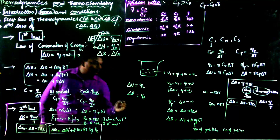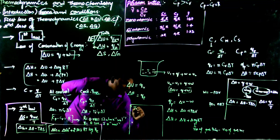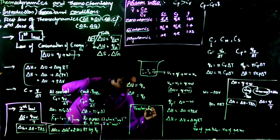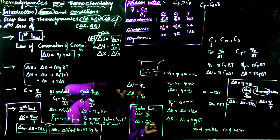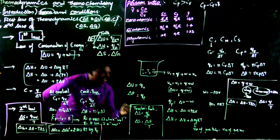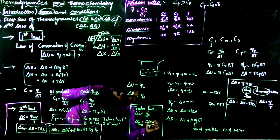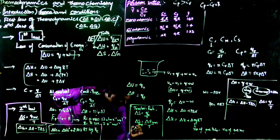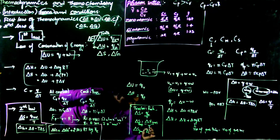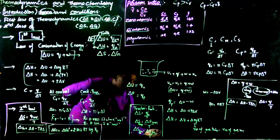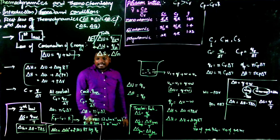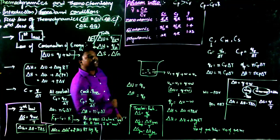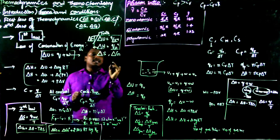For the Second Law, most questions come from entropy and Gibbs free energy. Note Trouton's rule, which uses the same formula: ΔS = q/T. At constant pressure: ΔS_vaporization = ΔH_vaporization/T. Similarly, ΔS_fusion = ΔH_fusion/T. Remember ΔG = ΔH − TΔS and the formula relating Gibbs free energy to the equilibrium constant.